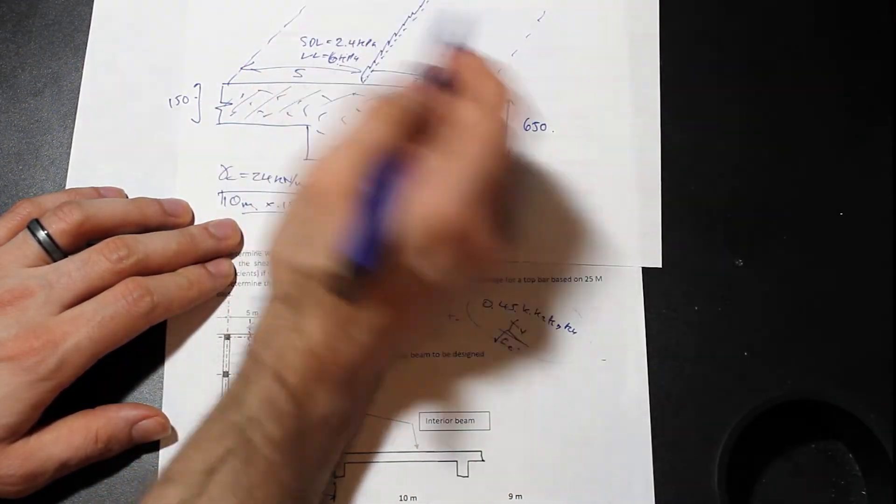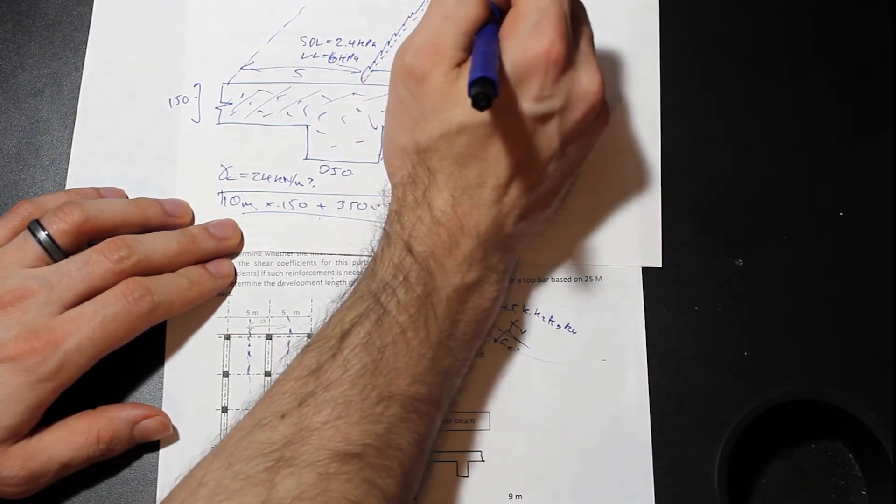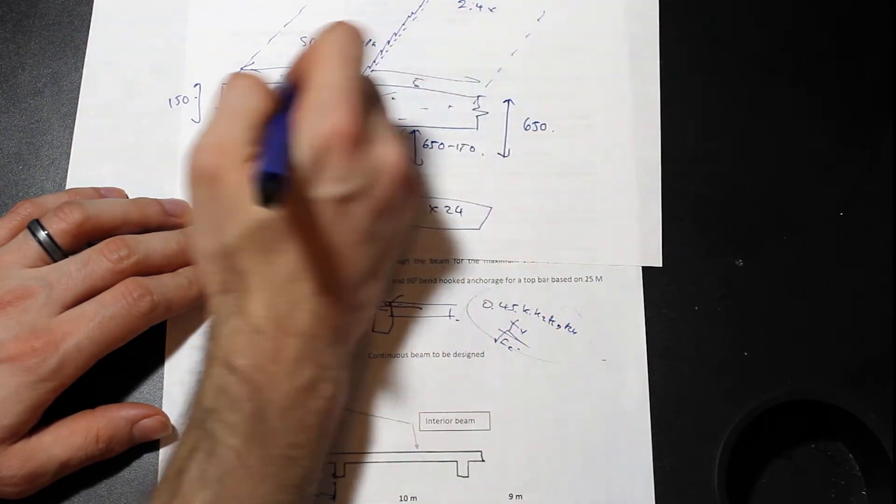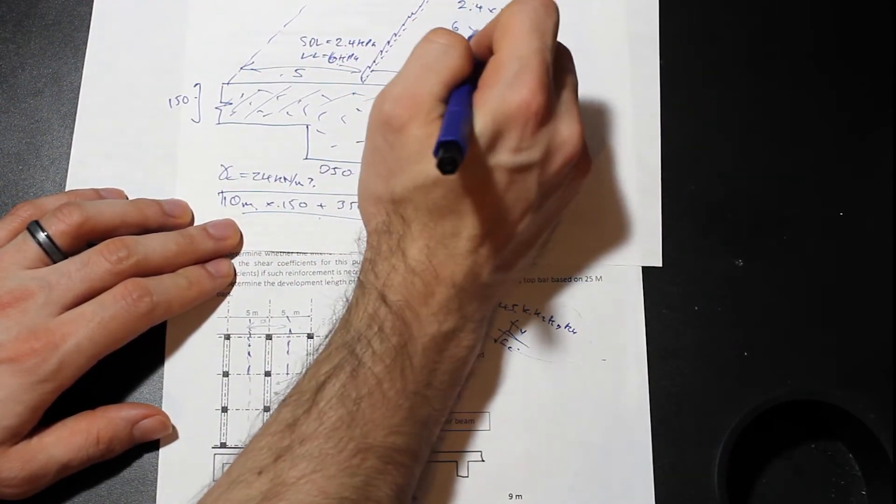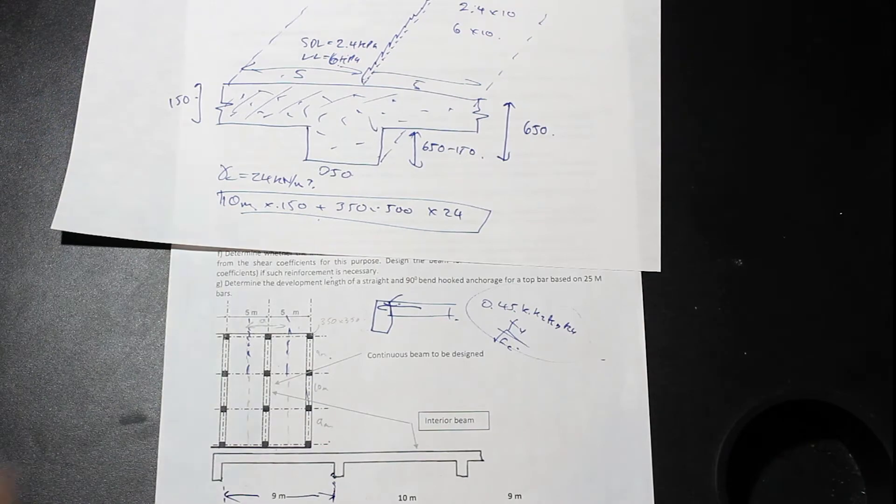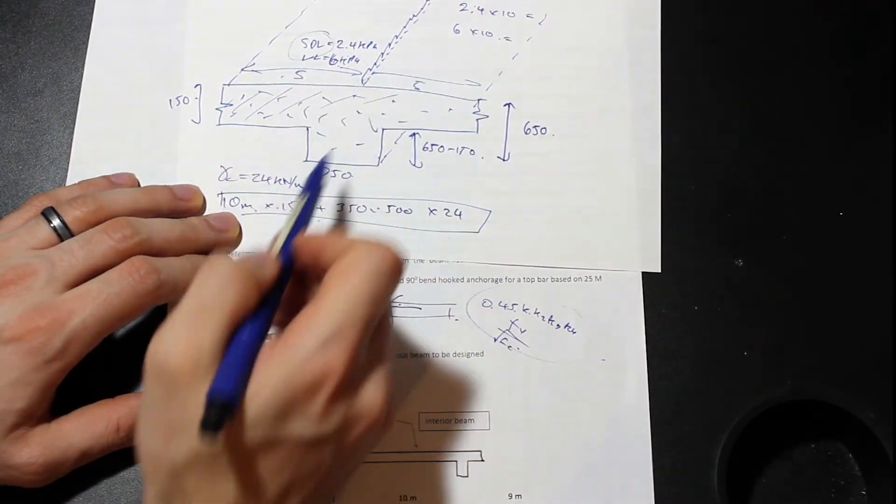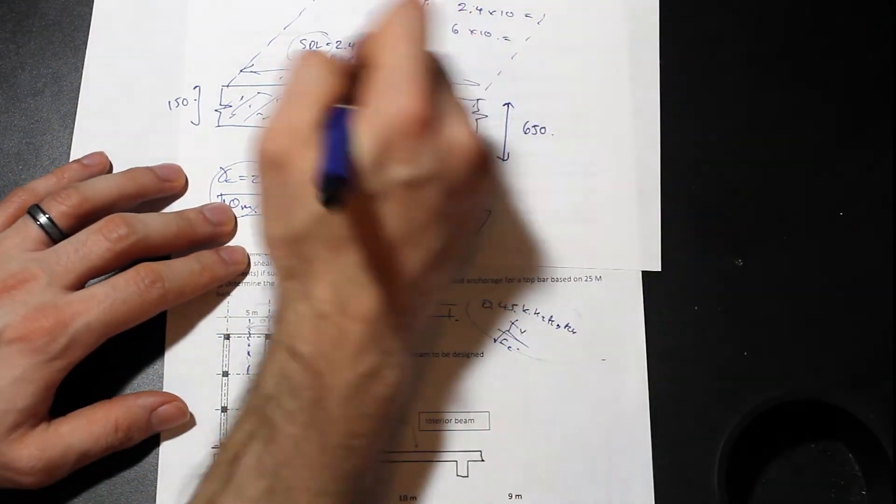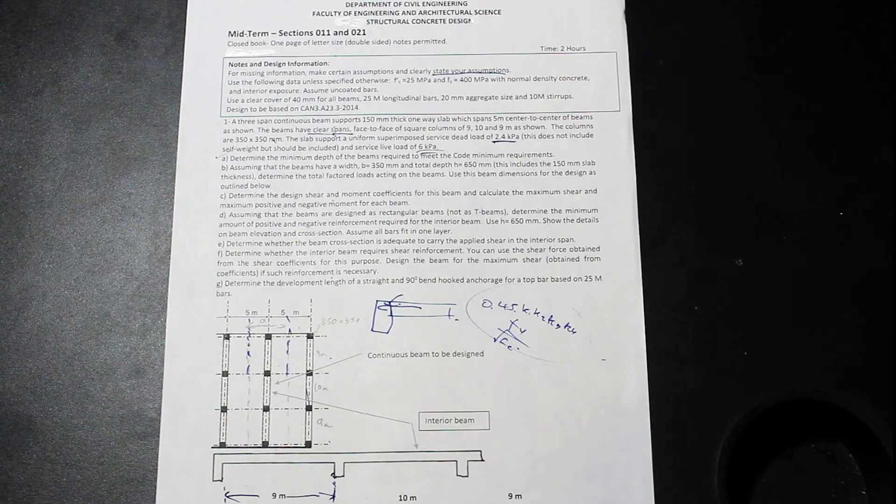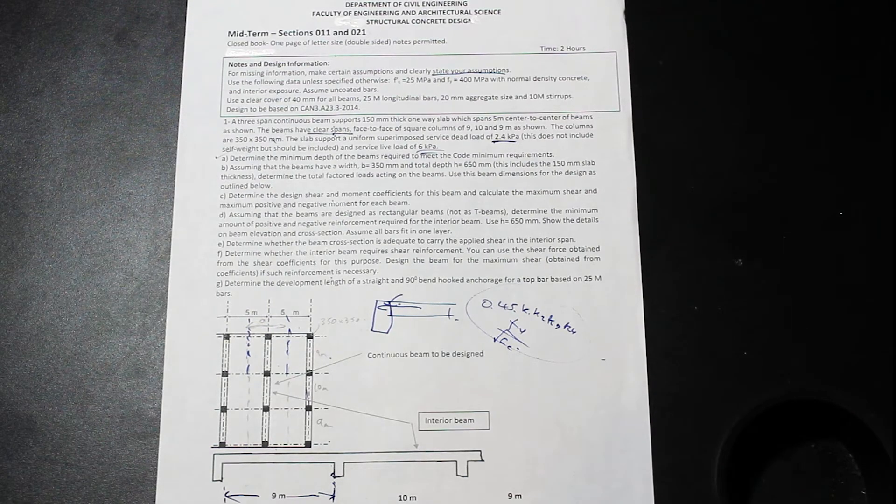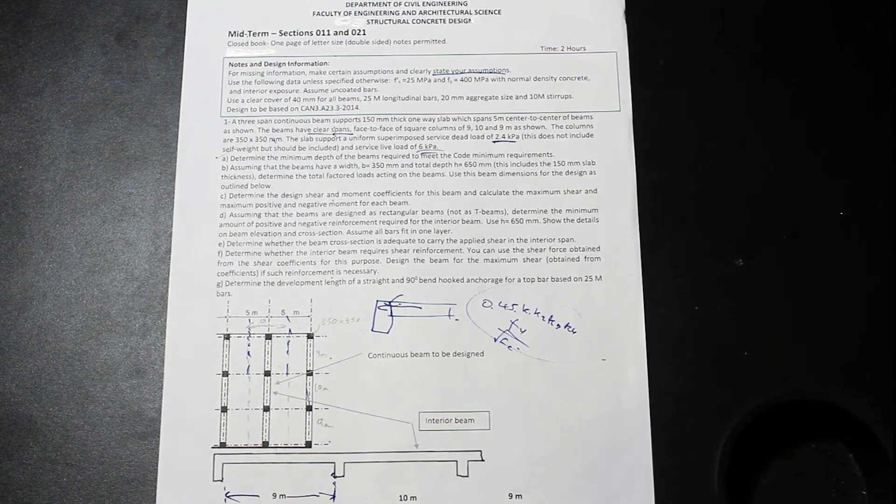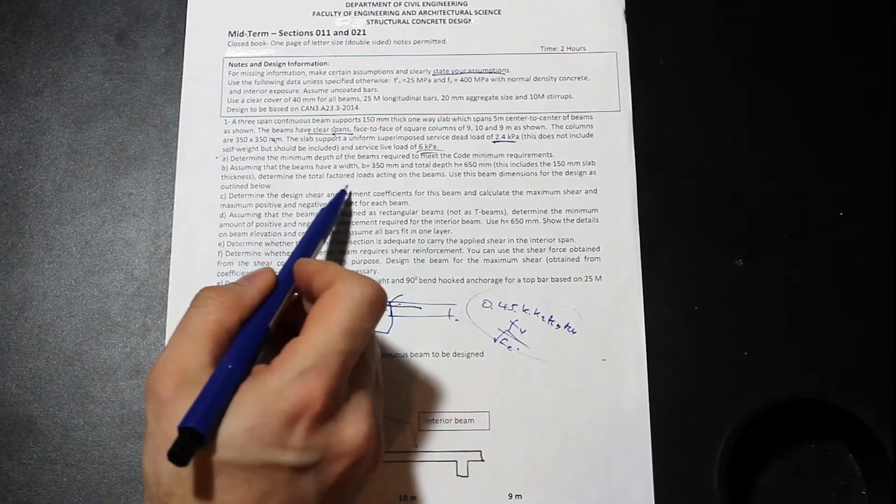And that's going to be our self-weight. We're going to add it to these. So we have our SDL here. So we're going to have 2.4 times the tributary, which is 10. And then we're going to have 6 times 10. Okay. And those are going to be our linear loads. And then we're going to factor them. So for our dead load and our dead self-weight, we're going to use 1.25. And for our live load, we're going to use a factor of 1.5. So that was a really kind of tricky part of getting the loads correct. And a lot of people made a mistake there. And they kind of, they got a bad mark. So that was that question.